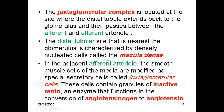To summarize: we have the macula densa, which are part of the distal tubule situated nearest to the glomerulus, and we have the juxtaglomerular cells, which are specialized secretory cells modified from the smooth muscle cells in the afferent arterioles. These juxtaglomerular cells contain granules of inactive renin, which is an enzyme that functions in the conversion of angiotensinogen to angiotensin.